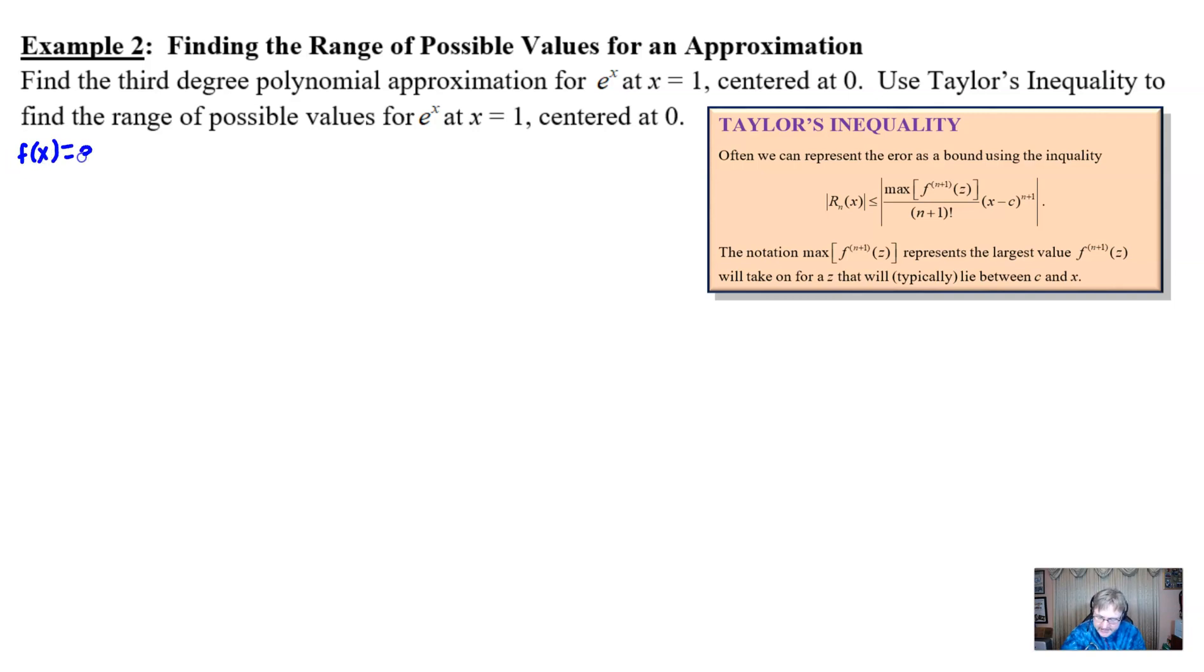So we start with our original function, which is e to the x. And we have to take a bunch of derivatives, three derivatives, in fact, so that we can get down to our third degree polynomial. Well, I hate to break the news to you, but taking these derivatives is going to be mighty boring, because this is what they are. There's not a lot of change in them. Now we're going to evaluate each of these at zero, because after all, we're looking for a Maclaurin polynomial, to be precise. And by the time you find f of zero, and f prime of zero, and f double prime, and f triple prime of zero, you just get one each time. Not a whole lot going on there.